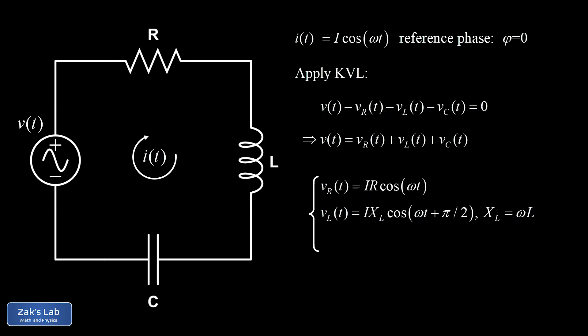Second, the inductor voltage: v_L = I·X_L·cos(ωt + π/2), leading the current by a quarter cycle. The inductive reactance X_L = ωL is frequency dependent and represents the effective resistance of the inductor. Third, the capacitor voltage: v_C = I·X_C·cos(ωt − π/2), lagging the current by π/2. The capacitive reactance X_C = 1/(ωC) is also frequency dependent.